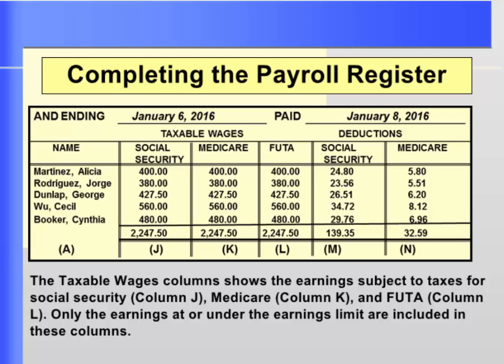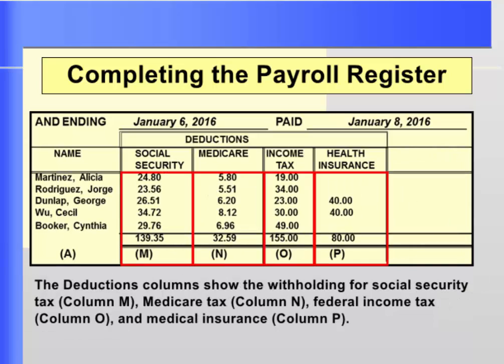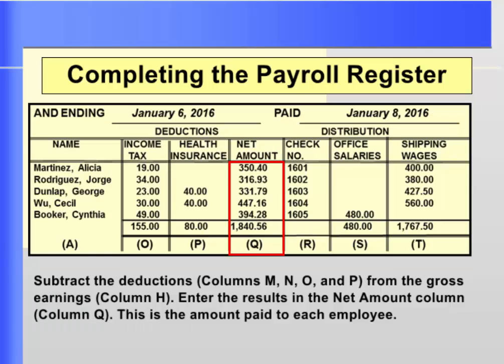The amount withheld from Alicia's paycheck for Social Security is $24.80, and Medicare withheld is $5.80. Income tax withheld for Alicia is $19, and she had no health insurance withheld. After all deductions, Alicia Martinez's net paycheck is $350.40. After the payroll register is completed, the columns are totaled and the register is proven.